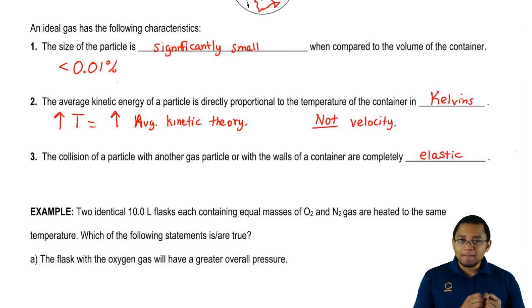Gas A hits gas B. Gas A is going to transfer its energy to gas B. B is going to transfer its energy to gas A. There's a transfer of energies, so no energy is lost. This is what we mean by the third criteria to being a gas law.